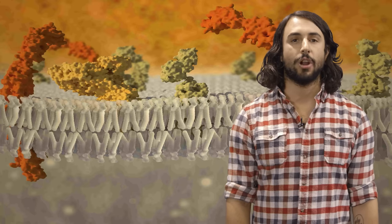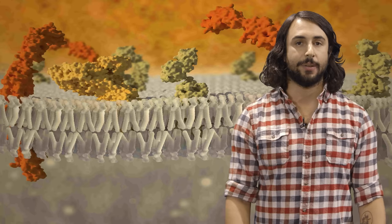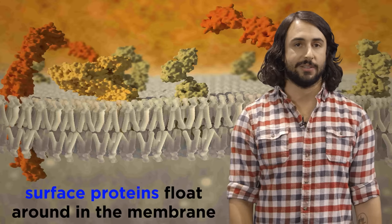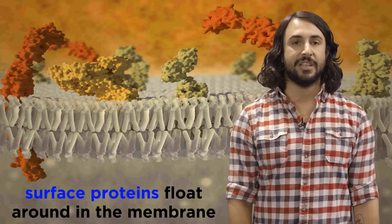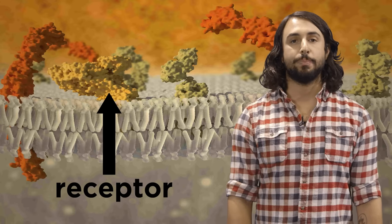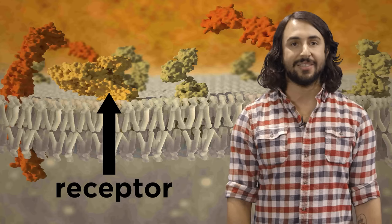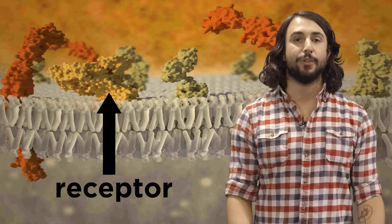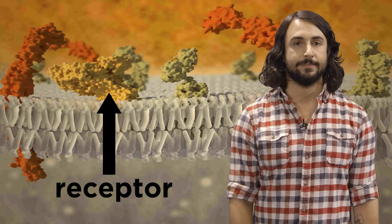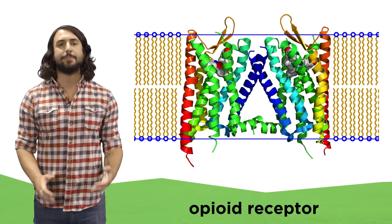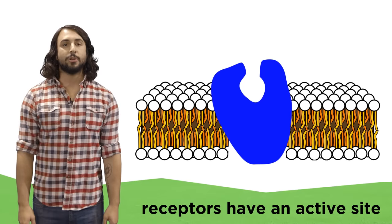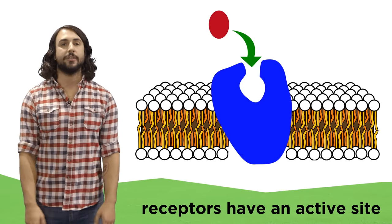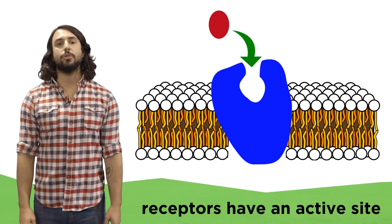We now have a pretty good picture of what the plasma membrane looks like, and we mentioned that swimming around in the sea of phospholipids, there are many surface proteins. Some of these proteins are called receptors, and these are the proteins that receive information from outside the cell, just like humans might use their eyes, ears, or noses to receive information about their surroundings. There are almost a thousand different types of receptors, and just like enzymes, receptors have an active site that is highly specific to one molecule or small collection of molecules, which we can refer to as ligands.